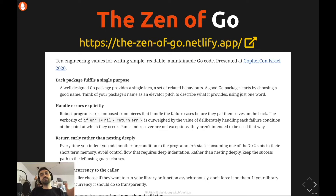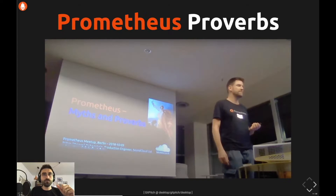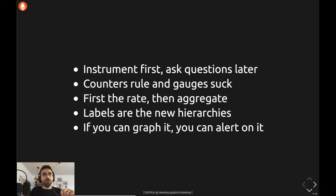After watching this, the idea came to me — why don't we have a similar set of rules for Prometheus? Of course, as with most of my ideas, it wasn't as novel as I thought. Bjorn Rabenstein had already asked the same question and gave a talk about it at the Berlin Prometheus meetup a couple of years ago. Bjorn said he had the idea after watching Rob Pike's talk and had been collecting these proverbs for a while. In that talk he canonized five proverbs.